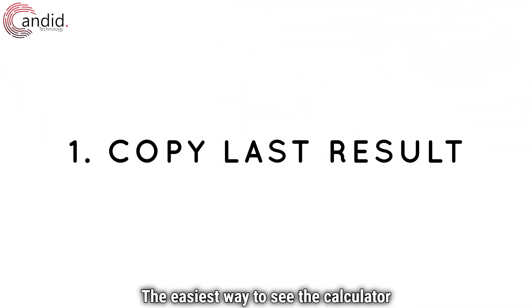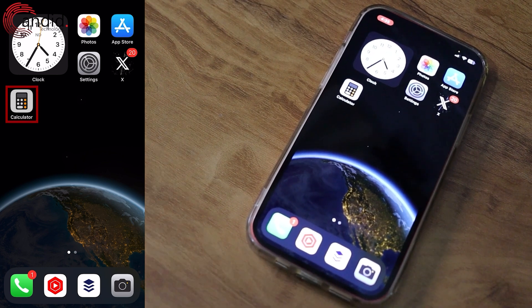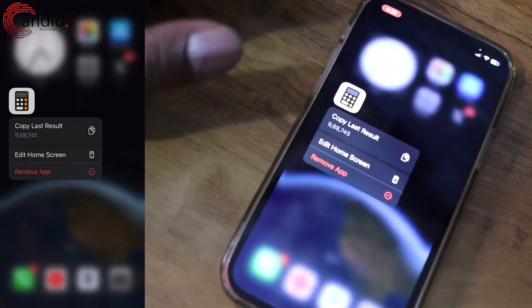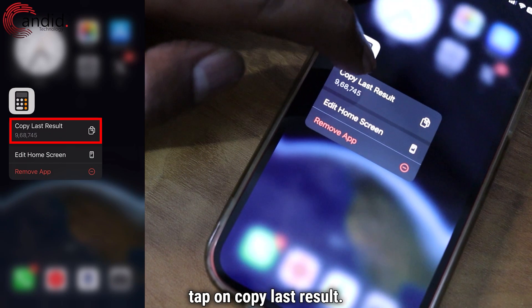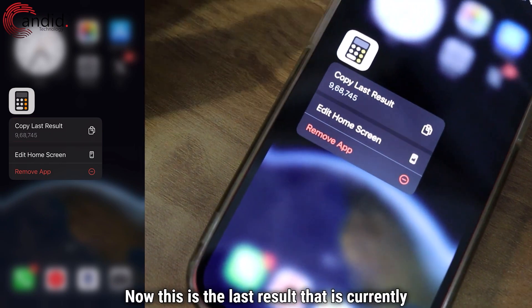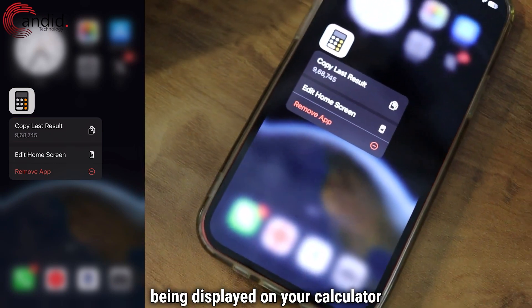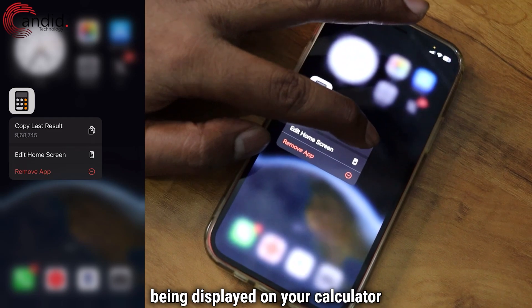The easiest way to see the calculator history on iPhone is to long press the calculator app and then tap on copy last result. Now this is the last result that is currently being displayed on your calculator screen.